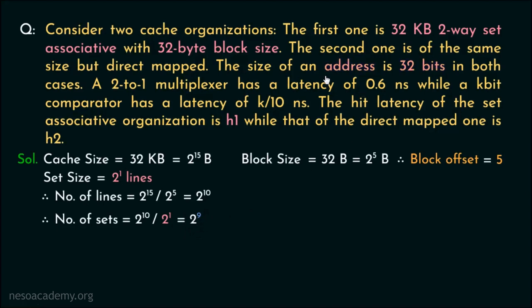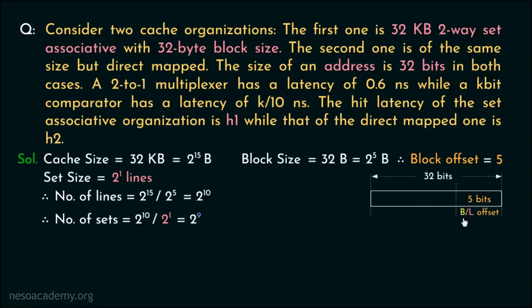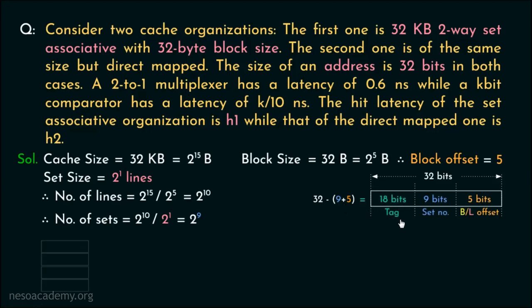The physical address is 32 bits. The 5 least significant bits are used for the block offset, 9 bits are used for the set number, and the remaining 32 − (9 + 5) = 18 bits are used for the tags. Now let's talk about the cache organization.